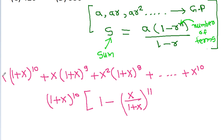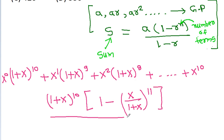Here we have x^0, x^1, up to x^10, so the total number of terms will be 11, and (1 minus r) is (1 minus x/(1 + x)).